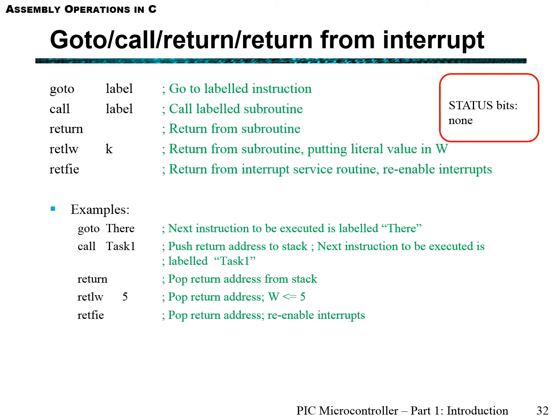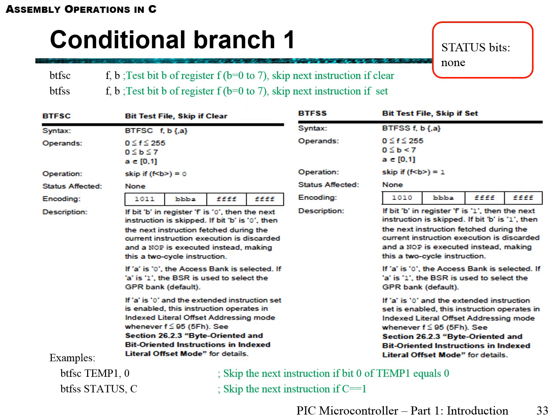In assembly, you have these go to or call return or return from interrupts, and they act similarly to subroutines. They act similarly to how you call a function. From a function, you can call another function and return out of the function and so forth. Once again, in the low level programming assembly, you have these direct interfaces with the hardware. In C, there is some discord between the two.